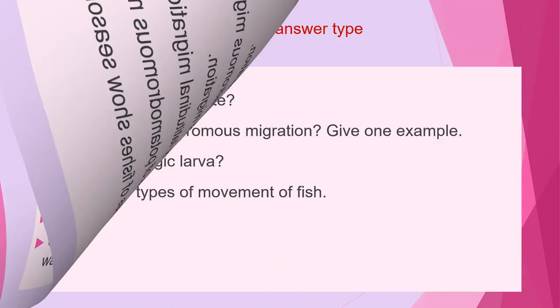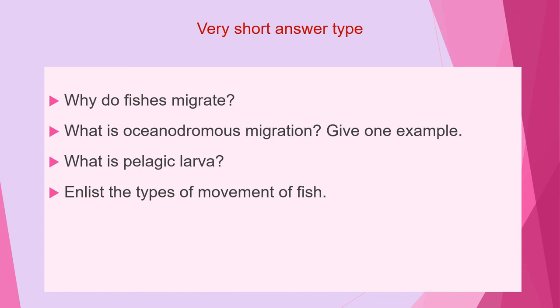Next is: give examples of fishes that show seasonal migration in the same water body. Next question is: why do fishes migrate? Next is: what is oceanodromous migration? Give one example — first the definition, then one example. Next question is: what is pelagic larva? And the last question of this category is: list the types of movement of fish.